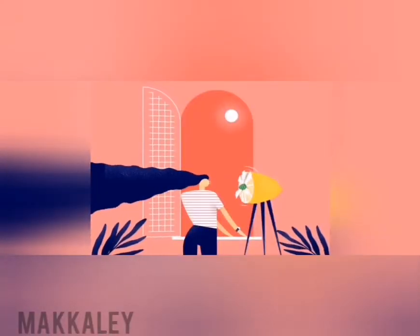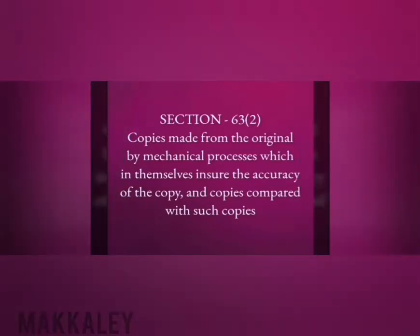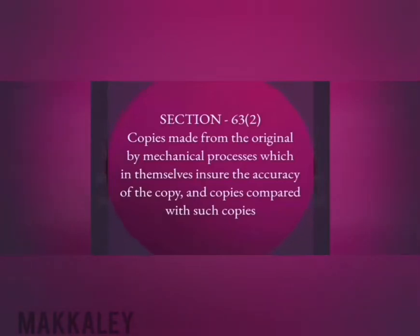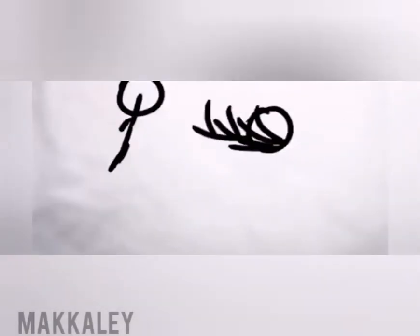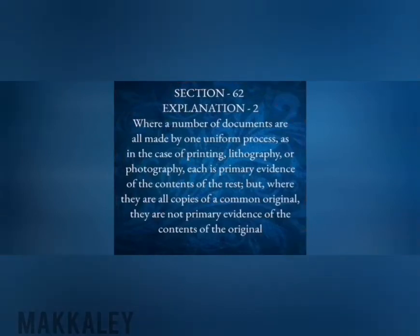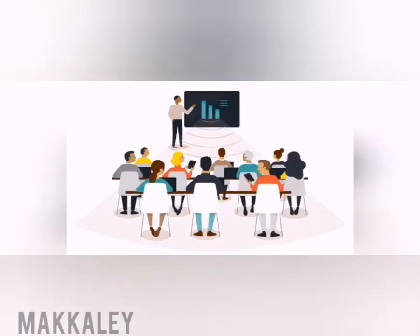Coming back to Section 63 — secondary evidence. The first type is copies made by a mechanical process from the original document, and copies compared with such copies. This is the same as referred to under Section 62, Explanation 2. The mechanical process includes printing, lithography, and photography, making such copies admissible as secondary evidence.